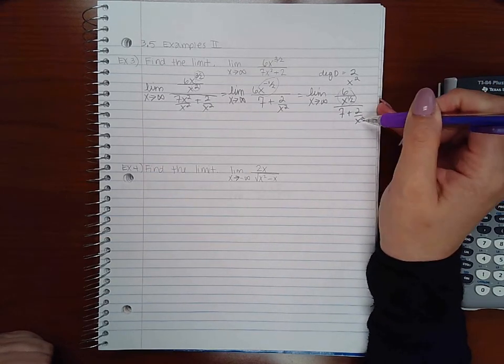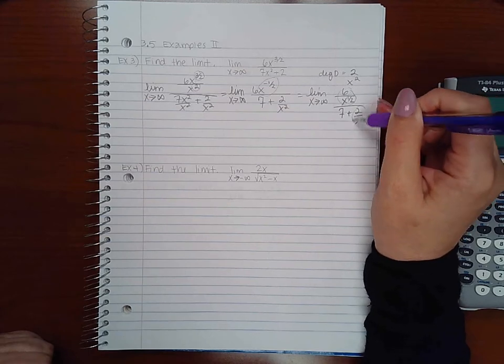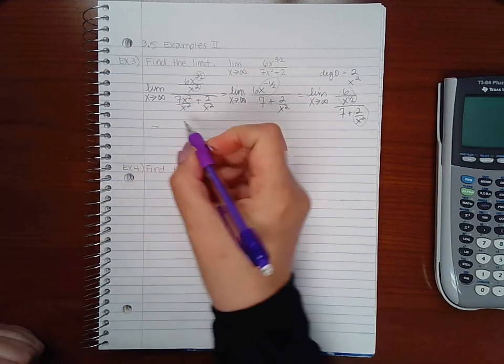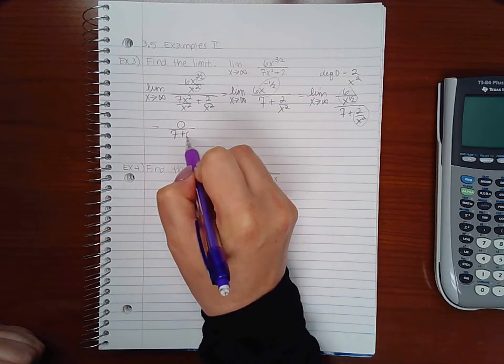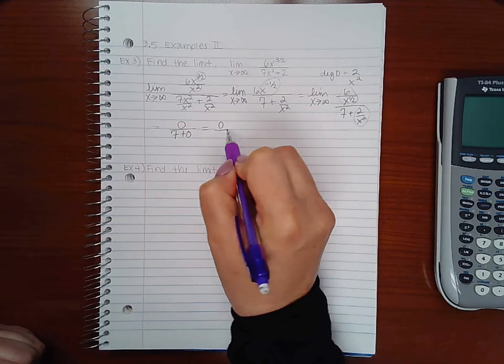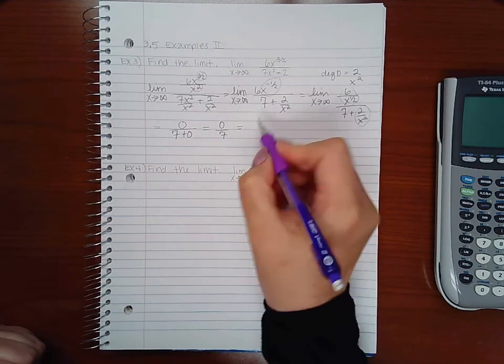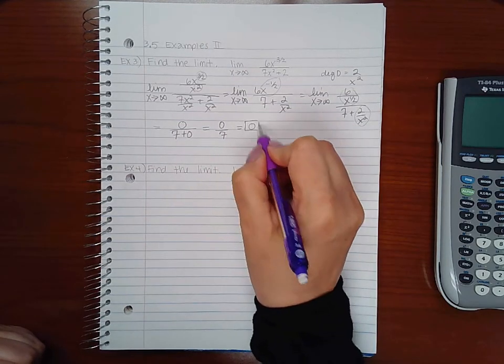Any constant over x to a positive exponent will go to 0. So the numerator will go to 0. The denominator will go to 7 plus 0, leaving you with 0 over 7. And 0 divided by 7 is just 0.